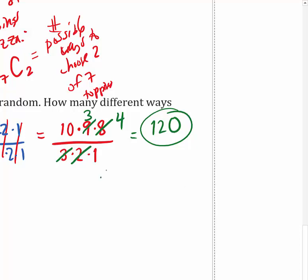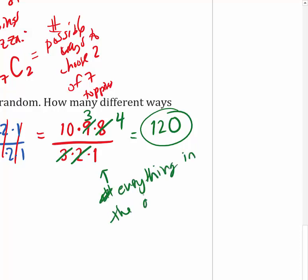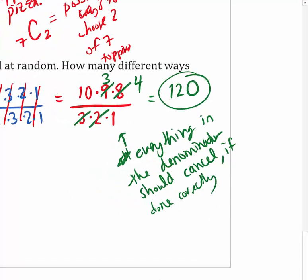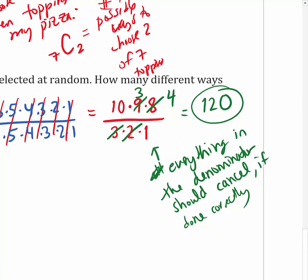When you use these formulas, everything in the denominator should cancel if done correctly, and you should end up with a whole number. Which actually makes sense - how can you have a fractional number of ways to do something? That wouldn't make sense. It has to be a whole number.